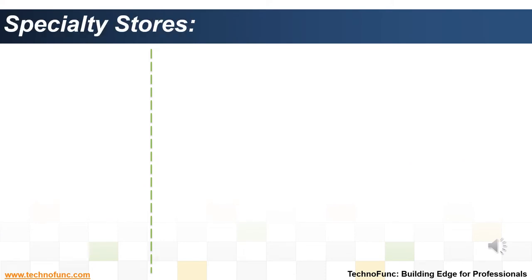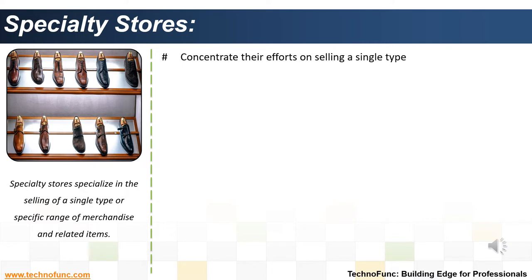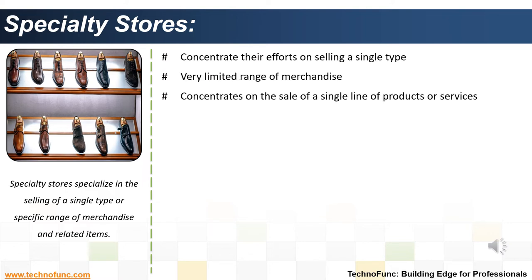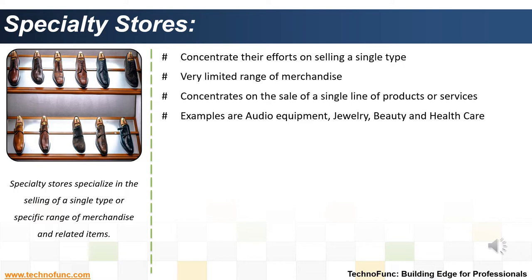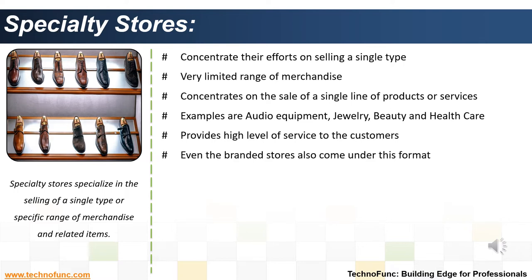Specialty stores are retail establishments that specialize in selling a single type or specific range of merchandise and related items. They concentrate on the sale of a single line of products or services such as audio equipment, jewelry, beauty and healthcare, clothing, musical instruments, sewing shops, and party supply stores. A typical specialty store gives high-level service to customers. Examples include Music World for audio needs, Tanishq for jewelry, and McDonald's, Pizza Hut for food services.